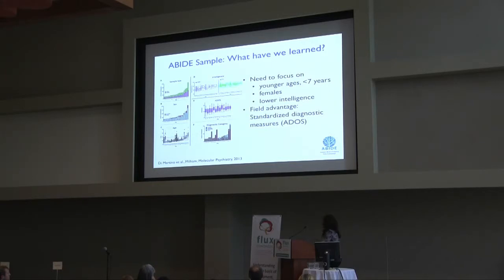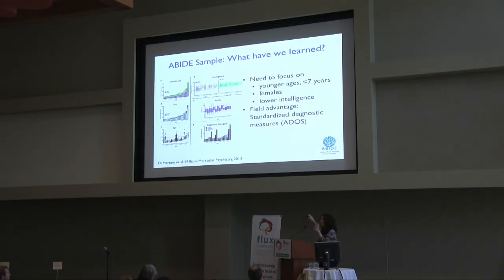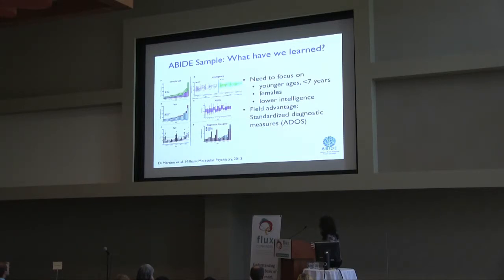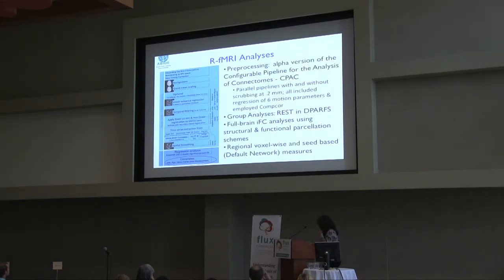Another theme that emerges is that most samples focus on males; some sites didn't even collect females, understandably due to efforts to maintain homogeneity in small samples. As a result, the field knows almost nothing about females with autism. The good news is the field is ahead of many other psychiatric disorders through standardized measures like the ADOS — the Autism Diagnostic Observation Schedule — for which 80% research reliability is required across sites.